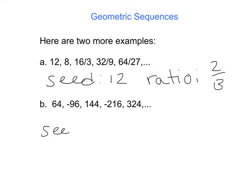Now our next example. We have a seed of 64, and there's something special about our constant ratio. It happens to be a negative number, because we go from positive to negative, positive to negative, positive, and so on. So our ratio is going to be negative 3/2.